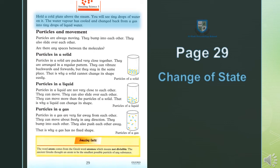Page 29, paragraph 1. Hold a cold plate above the steam — jis bartan mein humne pani garam kiya tha aur jismein bhaap bani thi, usi bhaap ke upar ek thandi plate ko rakhein. You will see tiny drops of water — aapko pani ke chote chote qatrein nazar aayenge us par. The water vapor has cooled and changed back from a gas into tiny drops of liquid water.